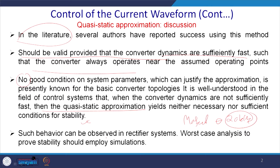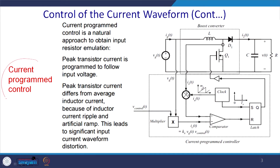Such behavior can be observed in rectifier systems. Watt's case analysis proves stability and should be employed for simulation — in simulation terms this is called the Monte Carlo condition. Now let us see the same boost converter and how it can be worked in a current control mode or current program control. This is your voltage — we assume this voltage may be like this and the current will also be like this, so that it does not have reflections from the DC side into the AC side. Our discussions will be constrained within this part.